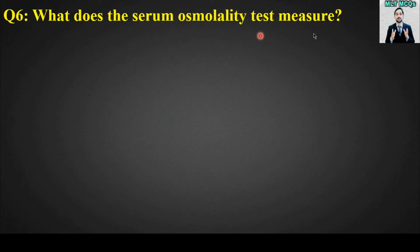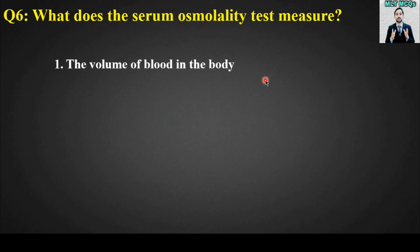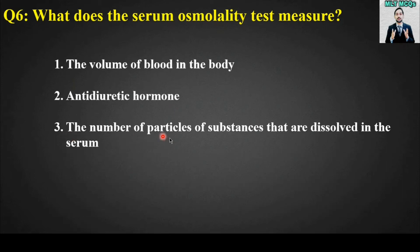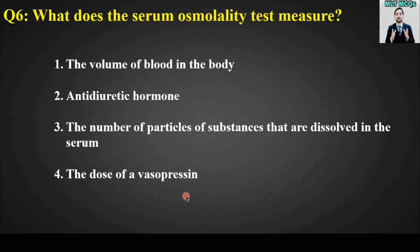MCQ number six: What does the serum osmolality test measure? Options: the volume of blood in the body; antidiuretic hormone; the number of particles of substances that are dissolved in the serum; the dose of vasopressin. The right answer is option number three — the number of particles of substances that are dissolved in the serum.